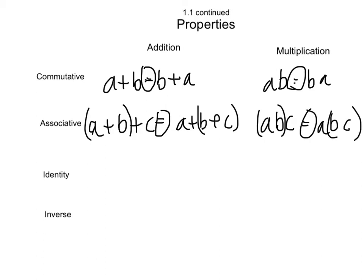The identity is what it sounds like. You have a plus 0 equals a. Your end result is the same as the beginning. With multiplication, you multiply by 1 and get the same thing.